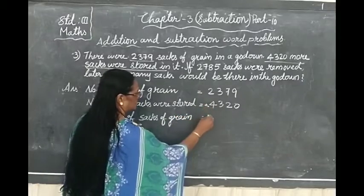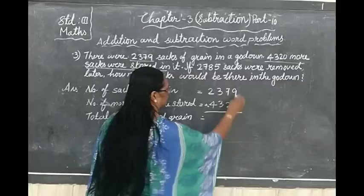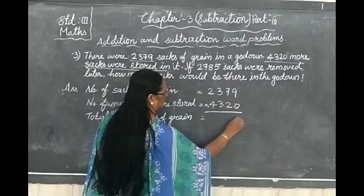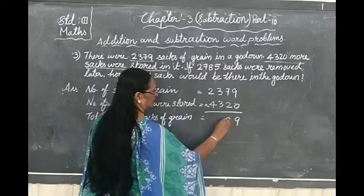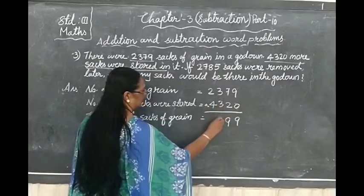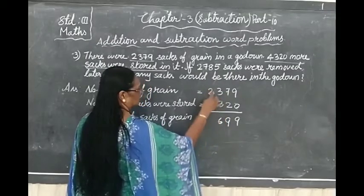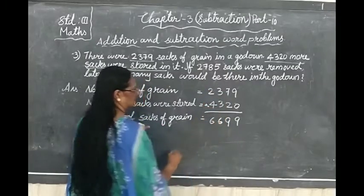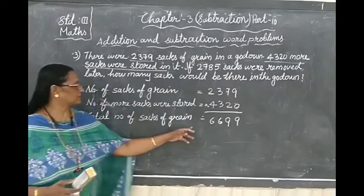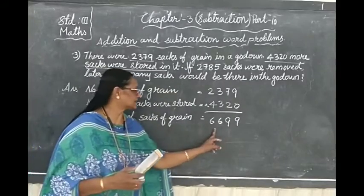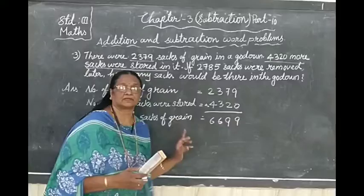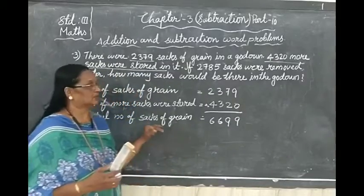What do we have to do? Add these two. Find out the answer. 9 plus 0 is 9. 7 plus 2 is 9. 3 plus 3 is 6. 2 plus 4 is 6. So how many total number of sacks are there now? 6,699 sacks are there now in the godown.